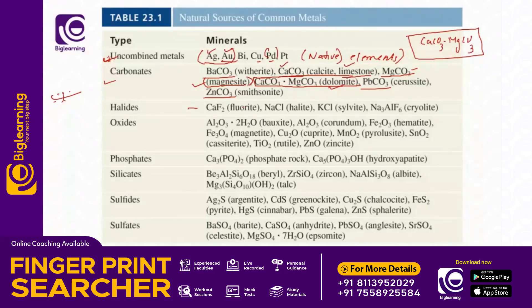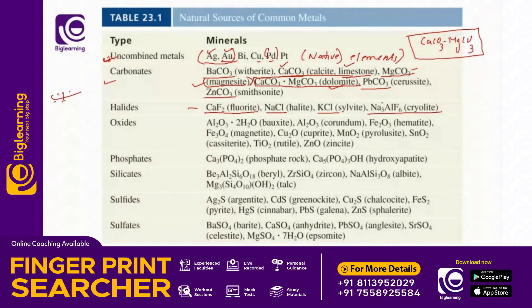Next are the halides. Calcium fluoride (CaF2) is called fluorite or fluorspar. NaCl is called rock salt. KCl is sylvite. Then cryolite — sodium aluminum fluoride (Na3AlF6) — is an important halide ore used in aluminum metallurgy.